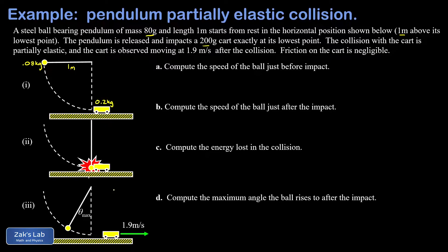Now, ultimately what we observe in this partially elastic collision is that the 200 gram cart is running away at 1.9 meters per second when the collision is complete. And the pendulum bob will rebound to some maximum angle that we call theta max. We're asked a whole series of questions leading up to that final conclusion. What's theta max? In part A, we're going to look at the speed of the ball just before the impact.